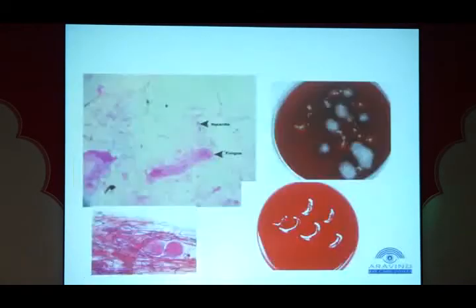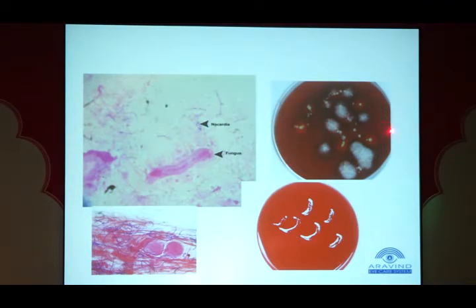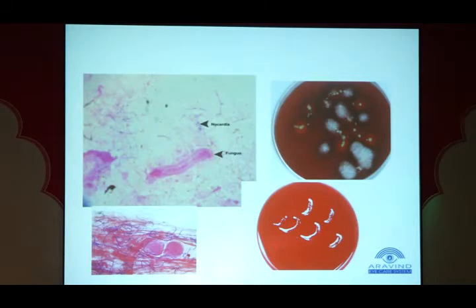The report should always contain quantification of organism and the day it grew to rule out contamination. If a report states very heavy growth of Staphylococcus along with fungus growing on the area of inoculation — the C-streak site — that is meaningful. Anything growing outside the inoculation area should not be reported. The ophthalmologist should educate the lab and ask for the quantity of growth, time of growth, and whether it grew at the C-streak site.